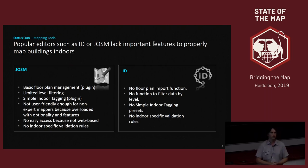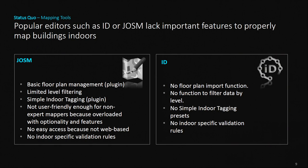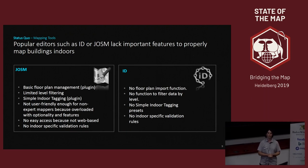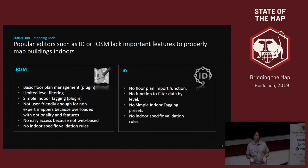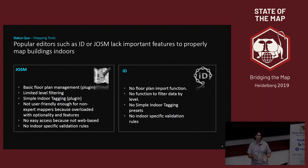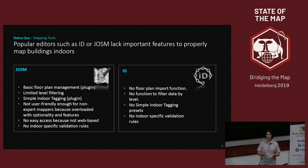There were already existing tools for indoor mapping, mainly iD and JOSM. JOSM is a great tool, widely used in the community, but it's a general tool. You can add plugins to manage floor plans — if you have an emergency or architect map of a building, you can add it and draw over it. There's basic level filtering, and support for the Simple Indoor Tagging preset. But JOSM is not meant for everyone — you have to take some time to learn it, you can't just take two minutes to add something, and it's not web-based.